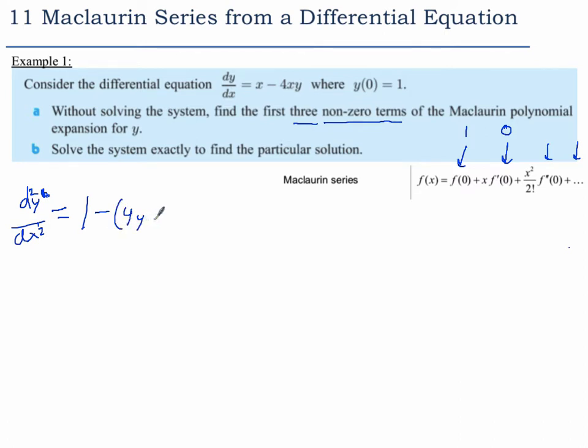I'll differentiate the x first, then I'll differentiate the y, and get a dy dx. Okay, so we have 1 minus 4y minus 4x dy dx. Okay, so that's that one.